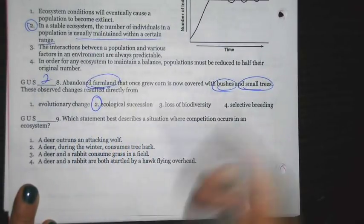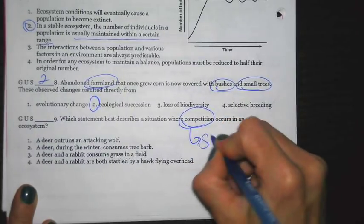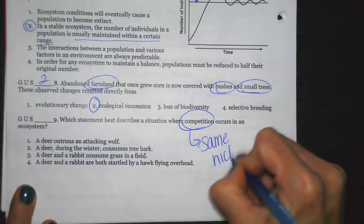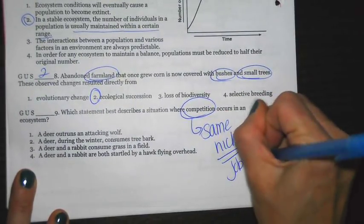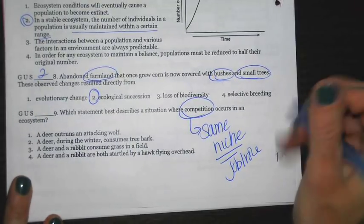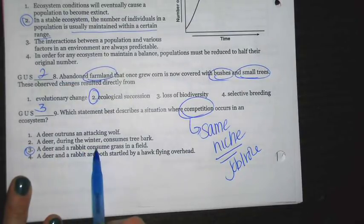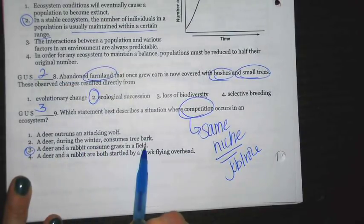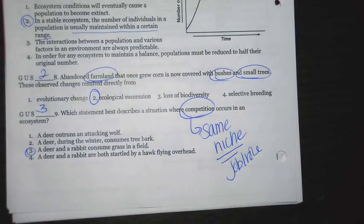Which statement best describes where competition occurs in the ecosystem? Remember, for competition to occur, two organisms are going to have to occupy the same niche. Niche is really just a fancy word for job or role. What is this organism eating in that ecosystem? The best answer choice here is two. Because it's noting that the deer and the rabbit are both eating grass from a field. They're eating the same thing. And because of that, they are going to fight over those resources.